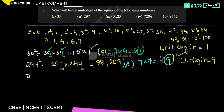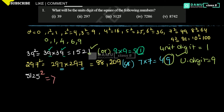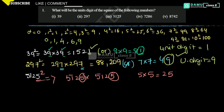Next one is 5125 whole square. What is the unit digit here? 5125 into 5125 — here it's 5 into 5. If you multiply 5 into 5, you get 25. So unit digit is 5. Unit digit will be equal to 5.